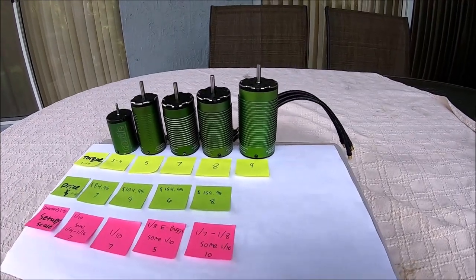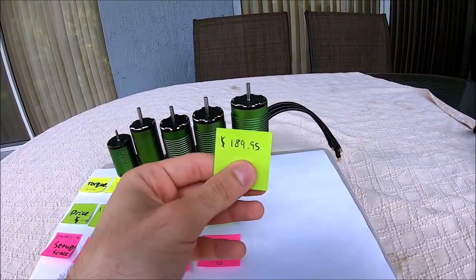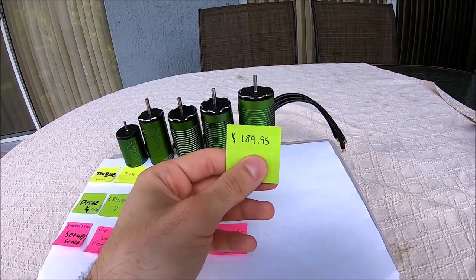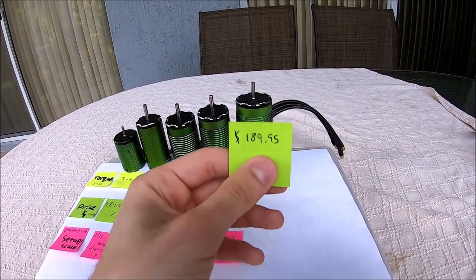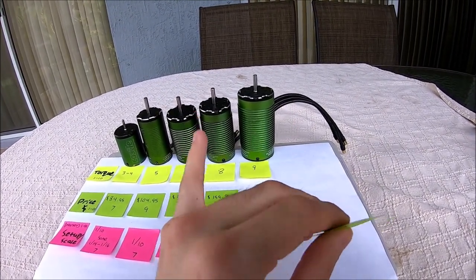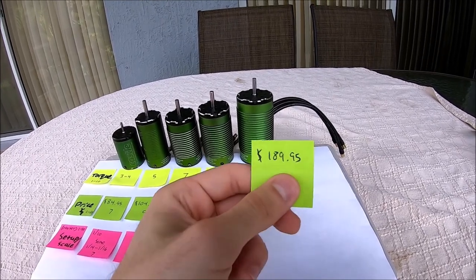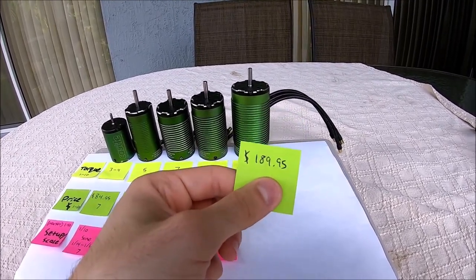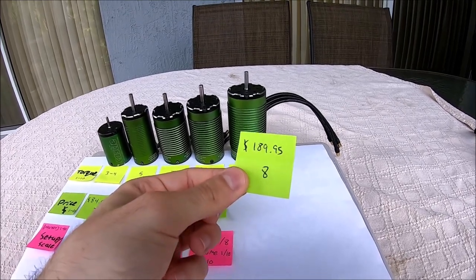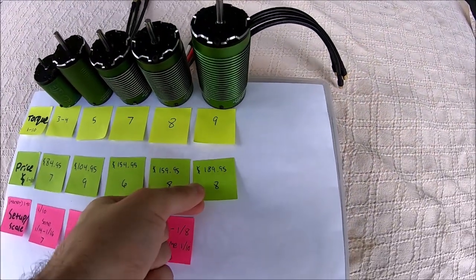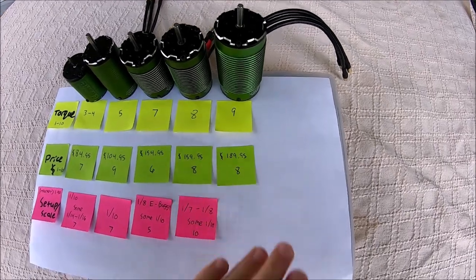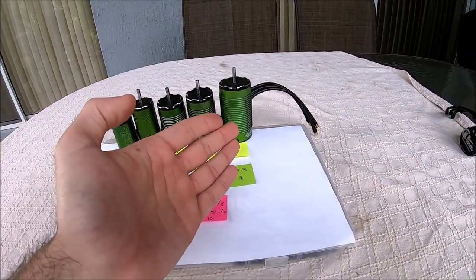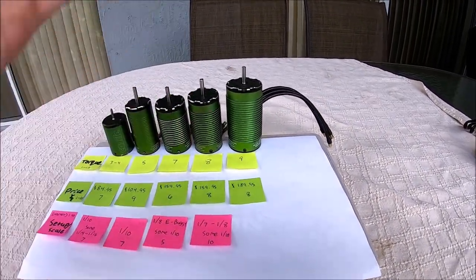Coming in at $189.95 USD, the 1717 is exactly $30 more than the 2200 1515. Now you're getting a hell of a lot more motor for that price, so I'm going to give this an 8. Yeah, the price is a little bit more on the expensive side, but what you're getting, you're pretty much getting a solid motor for its size, so absolutely worth it.